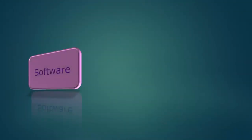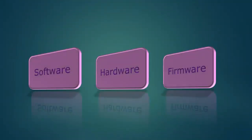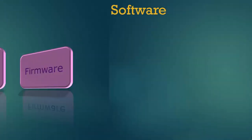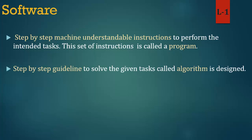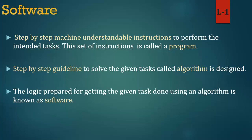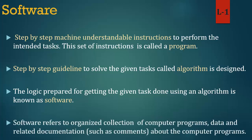Now we learn about software in detail. Software: step-by-step machine-understandable instructions to perform the intended tasks. This set of instructions is called a program. Step-by-step guidelines to solve the given tasks are called an algorithm. The logic prepared for getting the given task done using an algorithm is known as software. Software refers to an organized collection of computer programs, data and related documentation such as comments about the computer programs.